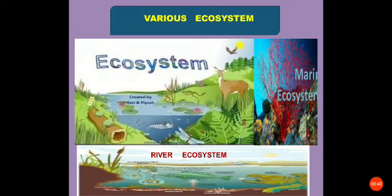An ecosystem is a system formed by the interactions of all living organisms with each other and with the physical and chemical factors of the environment in which they live. All plants, animals, and human beings depend on each other and on the immediate surroundings of the natural environment. There could be different ecosystems in different environments like deserts, mountains, dense forests, grasslands, rivers, oceans, and even ponds.